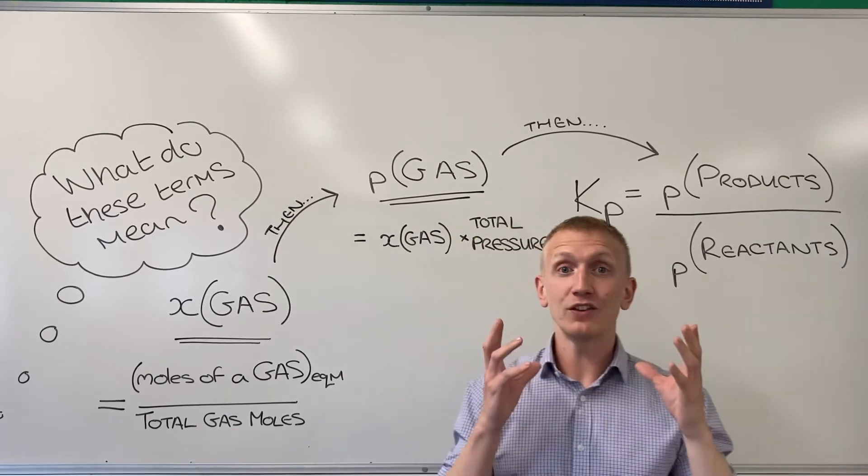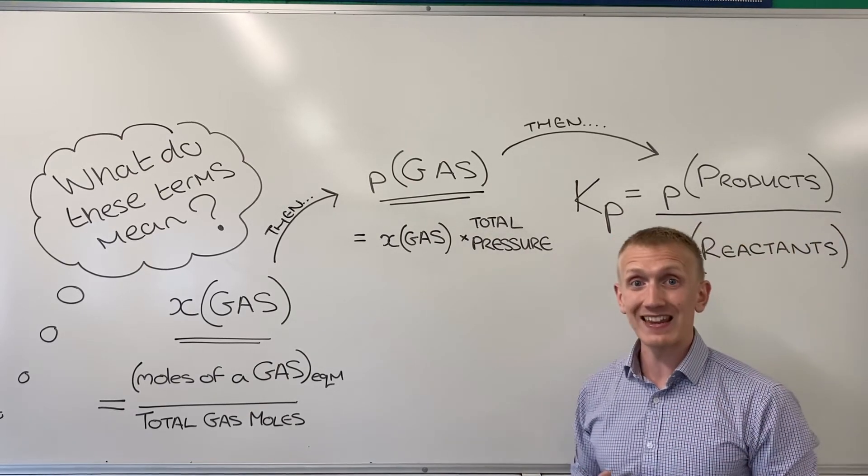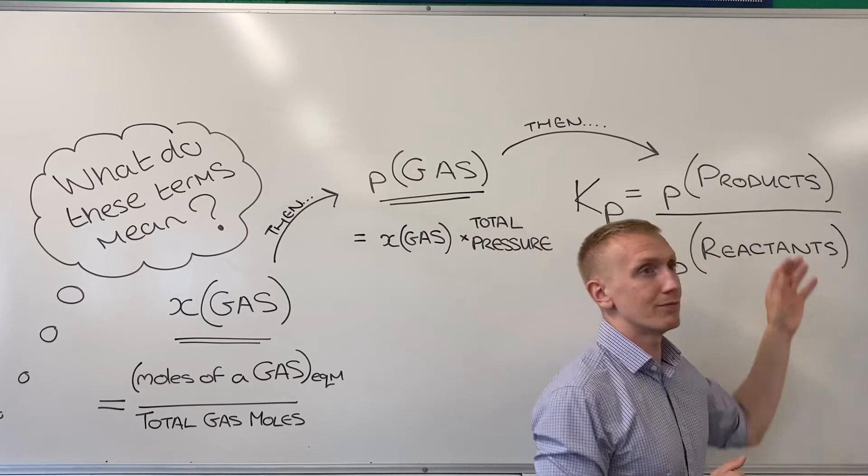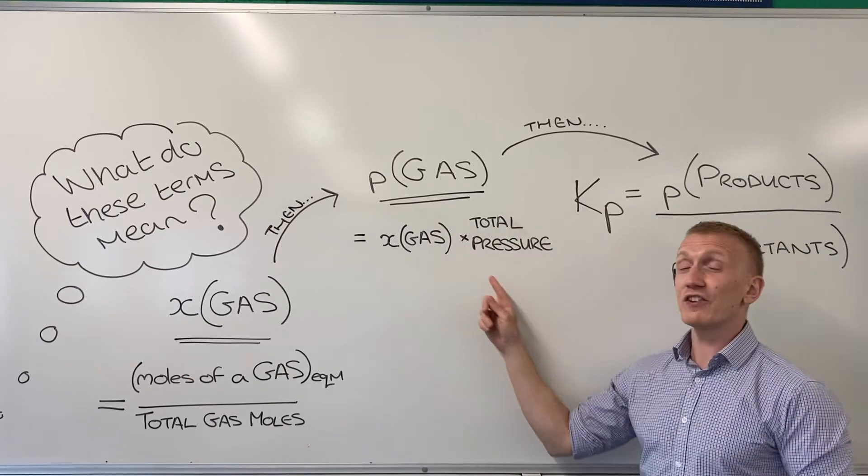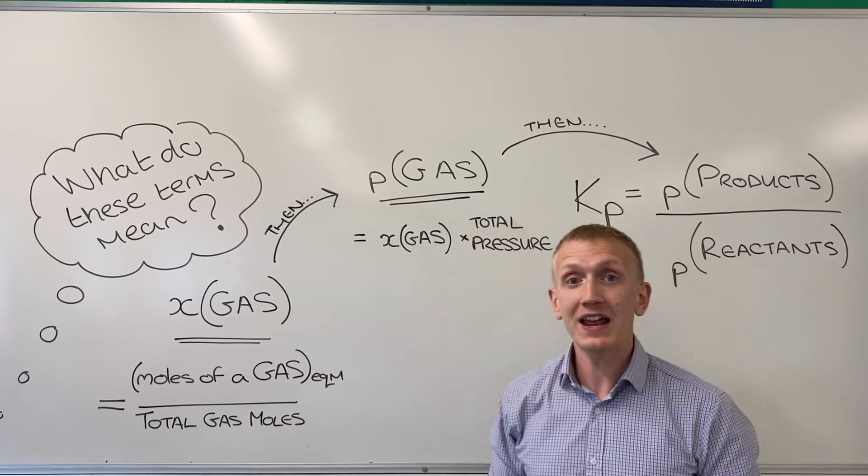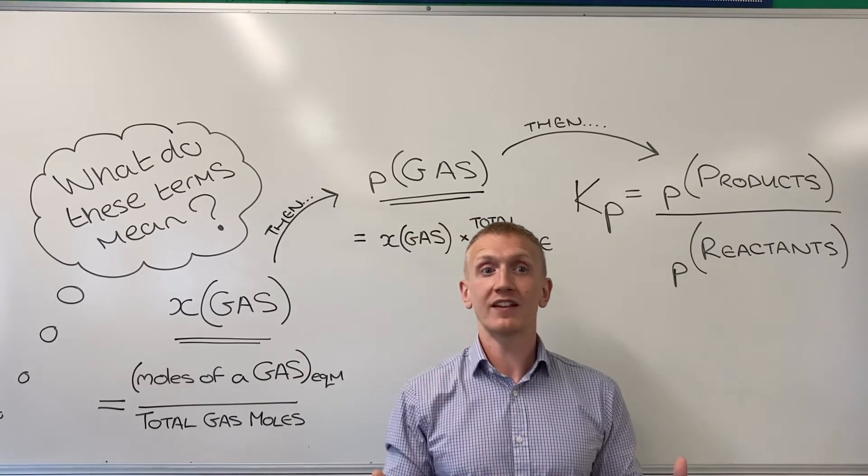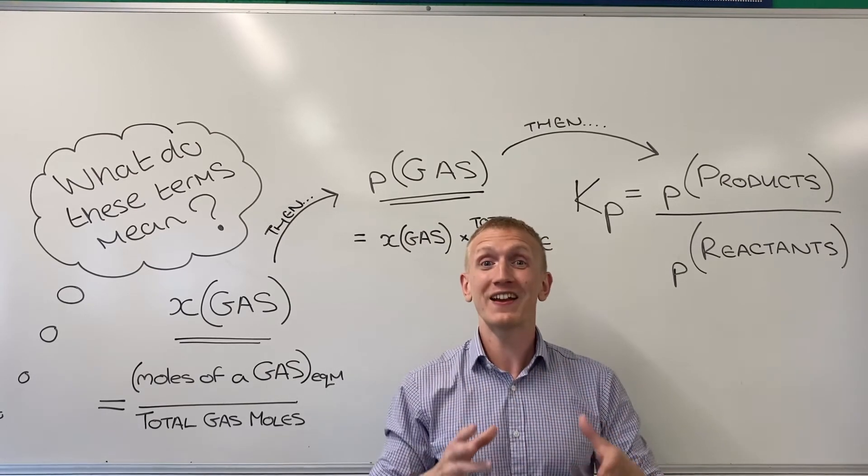The way you calculate your units, well it's the same as calculating the units of Kc except instead of loads of moles per decimeter cubed, you've got loads of whatever units were used here for the total pressure. So you could end up with a weird set of units like kilopascals to the power of minus one. That's perfectly fine, don't worry about it.